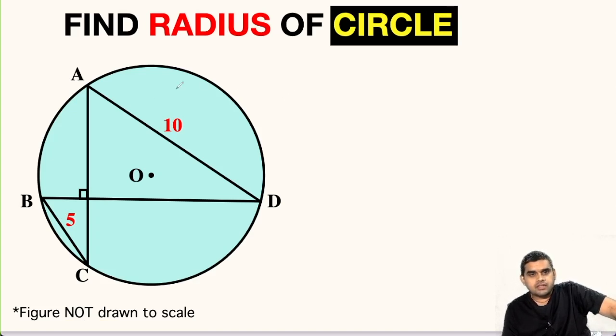In this question, a circle is given and we have to find its radius. Here the measure of chord AD is given as 10 units, also BC is given as 5 units. There is a disclaimer that the figure is not drawn to scale. So let us begin.